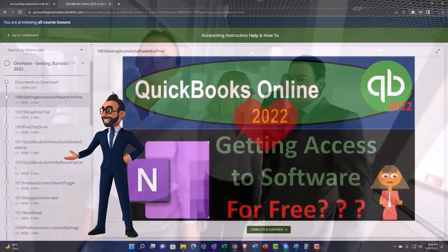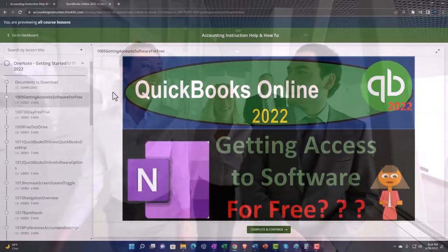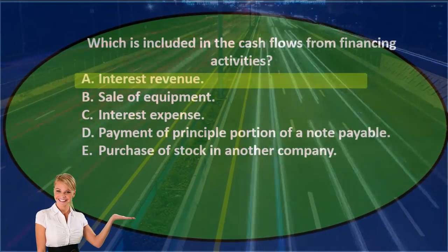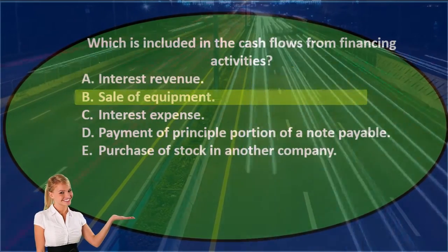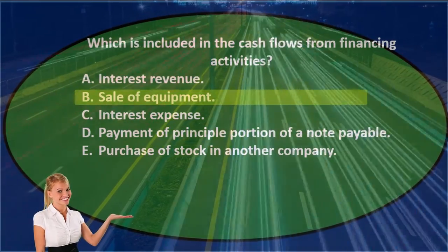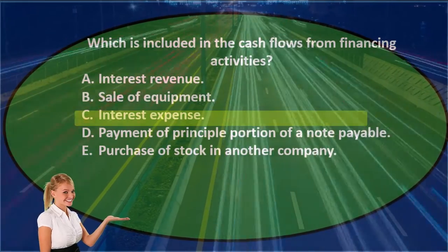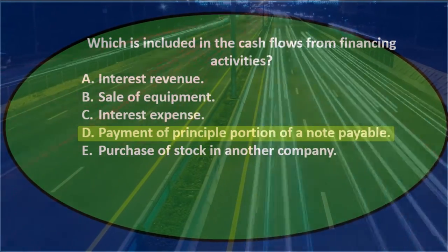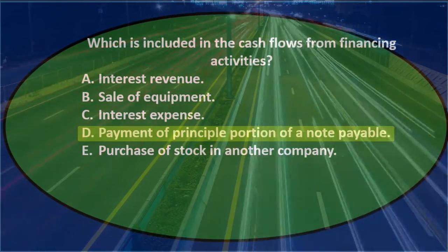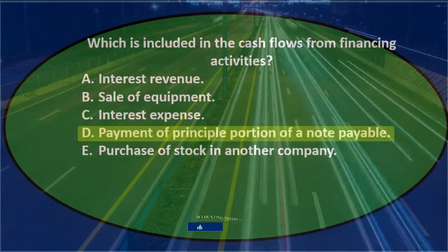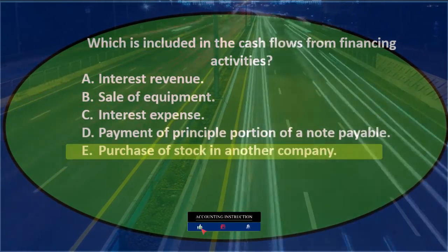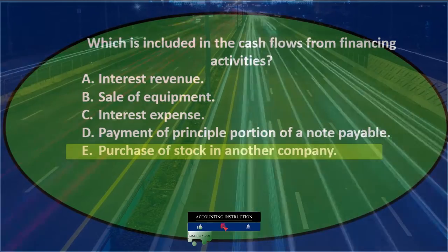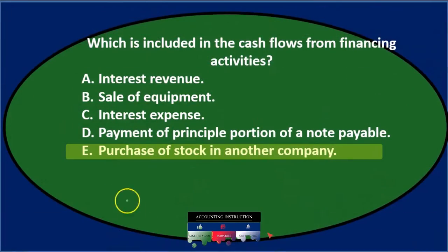First question: which is included in the cash flows from financing activities? A) interest revenue, B) sale of equipment, C) interest expense, D) payment of principal portion of a note payable, E) purchase of stock in another company. Let's go through this using the process of elimination.